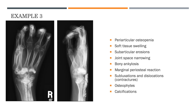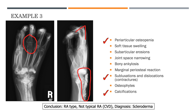This next case shows periarticular osteopenia, contractures in the form of subluxations and dislocations, and soft tissue calcification. Putting all of these findings together - periarticular osteopenia, contractures, and soft tissue calcification - this is a fairly typical presentation that you would see in a patient with scleroderma.